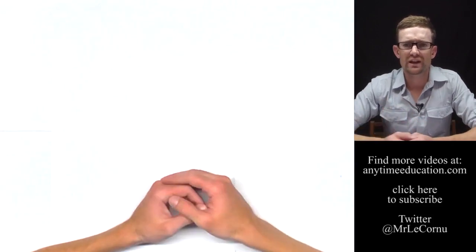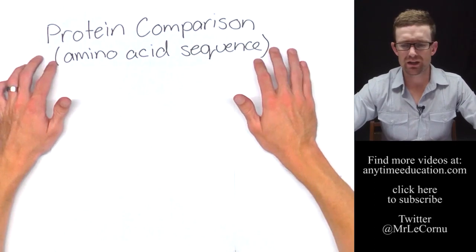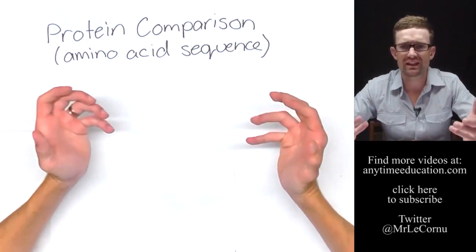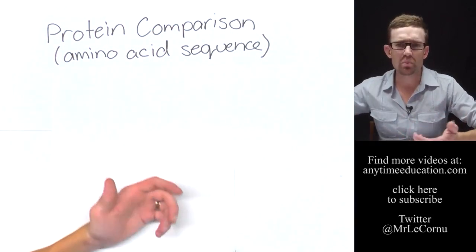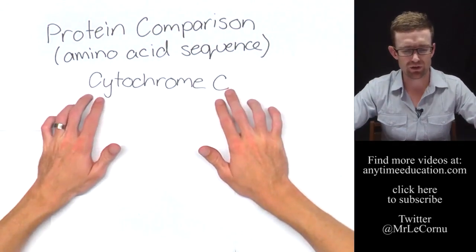So the final technique that can be used is called protein comparison, which is where we're looking at the amino acid sequence from the same protein in two different species. We need common proteins to do this. One really common one is cytochrome C.